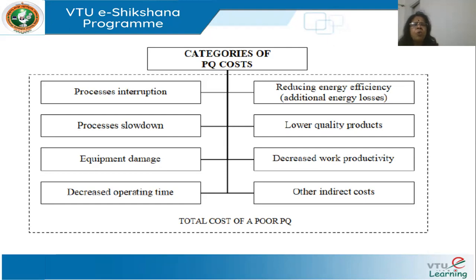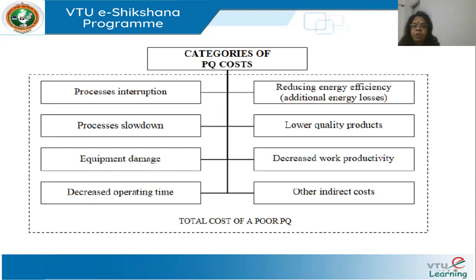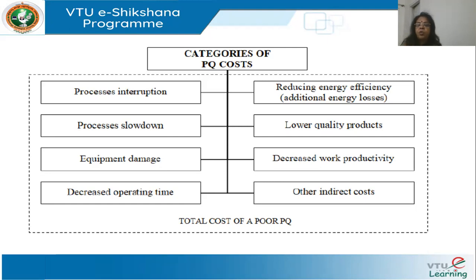As domestic consumers, we do not face too many issues. But industries definitely do, because they have sensitive equipment. Imagine a 5000 HP motor — even a 1% reduction in efficiency would result in a huge energy loss. Whereas in a house, if a fan motor's efficiency reduces by 1%, it may not even be perceptible in your energy bill. Industries have to be very cautious about these things, and this is how costs are evaluated.